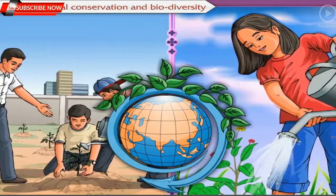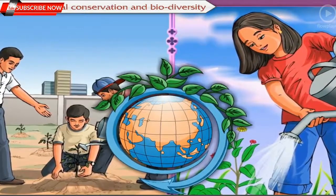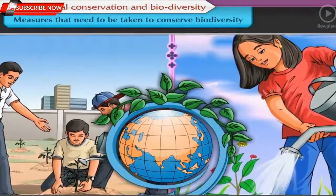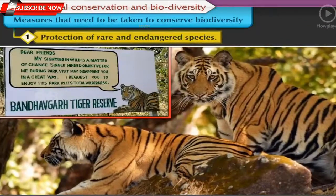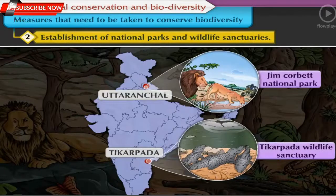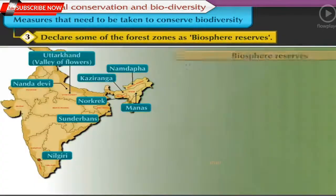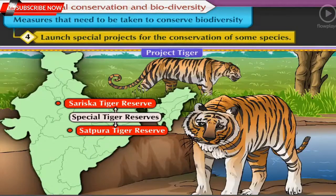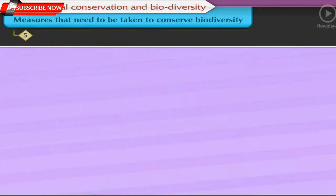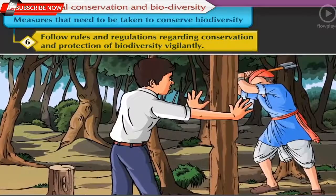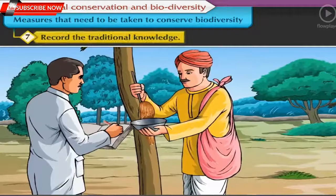Considering today's scenario, there is a lot of emphasis on conservation of biodiversity. Some measures that need to be taken include: one, protection of rare and endangered species; two, establishment of national parks and wildlife sanctuaries; three, declare some forest zones as biosphere reserves; four, launch special projects for conservation of some species; five, conservation of plants and animals; six, follow rules and regulations regarding conservation vigilantly; and seven, record traditional knowledge.